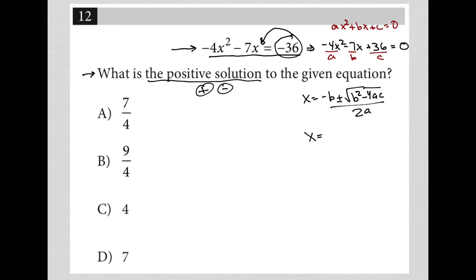Plus or minus the square root, b squared, negative 7 times negative 7 is 49, minus 4 times a is negative 4 times c is 36, all over 2 times a is negative 4.